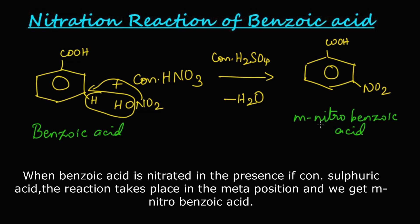Let us summarize the reaction. When benzoic acid is nitrated in presence of concentrated sulfuric acid, the reaction takes place in the meta position. The NO2 is attached in the meta position, so we get meta nitro benzoic acid as the product.